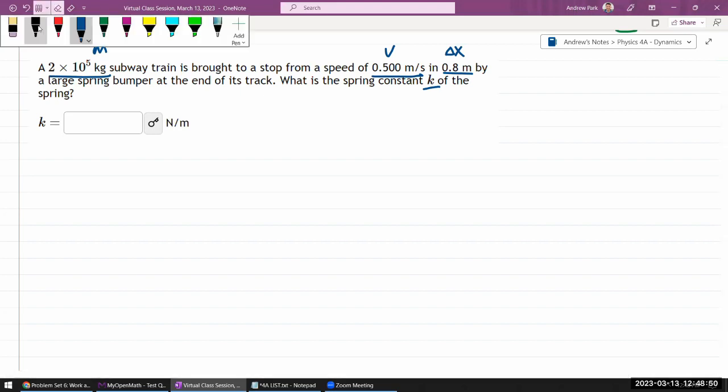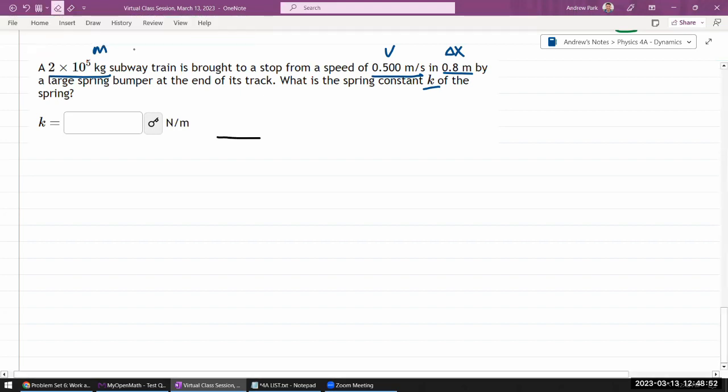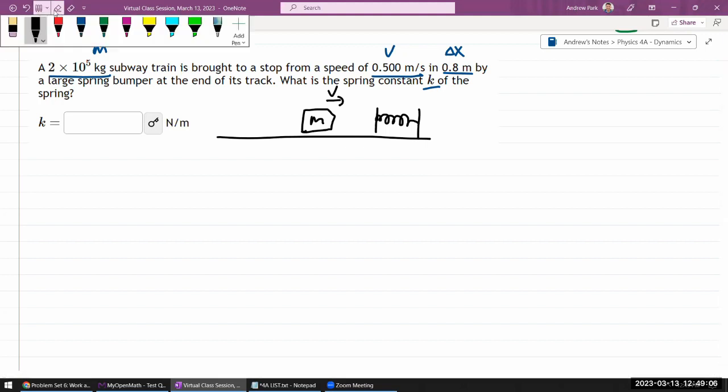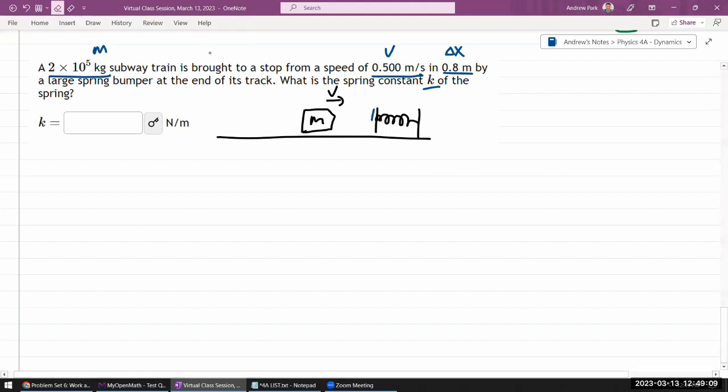So let me sketch this out to make sure I correctly understand it. We have some kind of stopping spring at the end, and we have some object with some mass that's coming in with some speed. It's going to undergo a collision process. It's going to make contact with a spring. Let's say this is my x equals zero. And it's going to compress. When it's compressed, this distance delta x, it'll be brought to a stop.